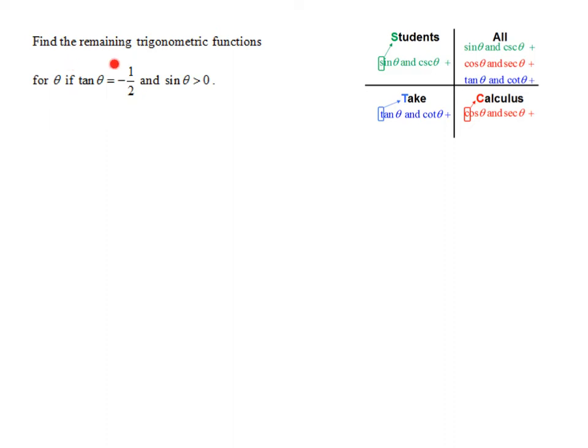In this problem, we need to find the remaining trig functions for angle theta. We're given that tangent of theta is negative one-half and that the sine of theta is positive. We're not told the quadrant that theta is in, so we need to find that first so we can draw a picture and then find all the information we need. The first thing we know is that the tangent of theta is negative.